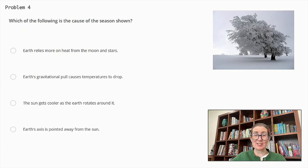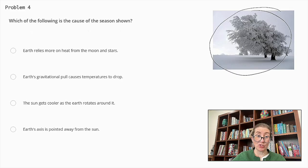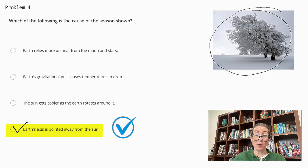Which of the following is the cause of the season shown? Earth relies more on heat from the moon and stars. Earth's gravitational pull causes temperatures to drop. The sun gets cooler as the earth rotates around it. Or, Earth's axis is pointed away from the sun. We can see the image clearly shows winter. And the correct answer here is Earth's axis is pointed away from the sun. During the winter, in either hemisphere, that part of the earth is tilted away from the sun, leading to shorter days, lower angles of sunlight, and colder temperatures.